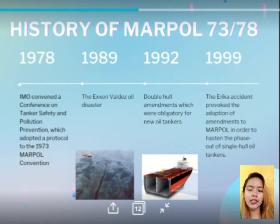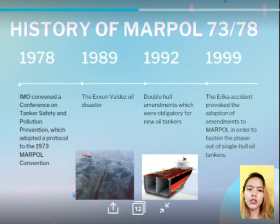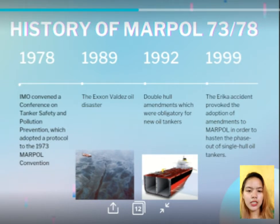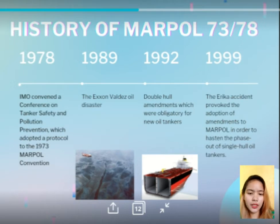In 1978, the IMO convened a conference on tanker safety and pollution prevention, which adopted a protocol to the 1973 MARPOL convention introducing further and stricter measures, including requirements for certain operational techniques and a number of modified constructional requirements. This combined instrument is commonly referred to as MARPOL 73/78 and it came into effect on October 2, 1983.